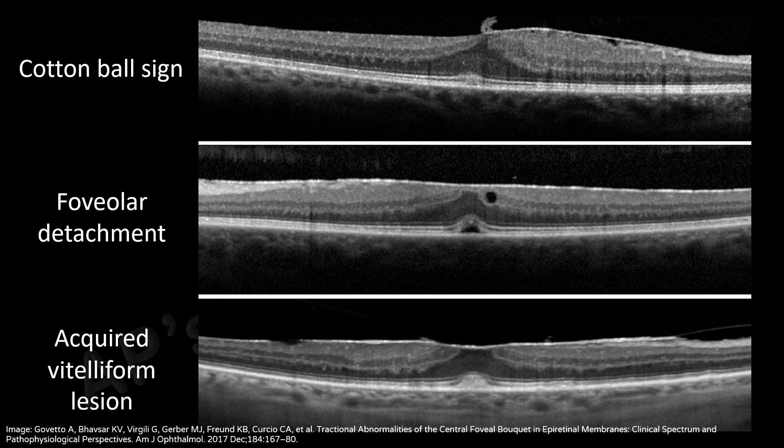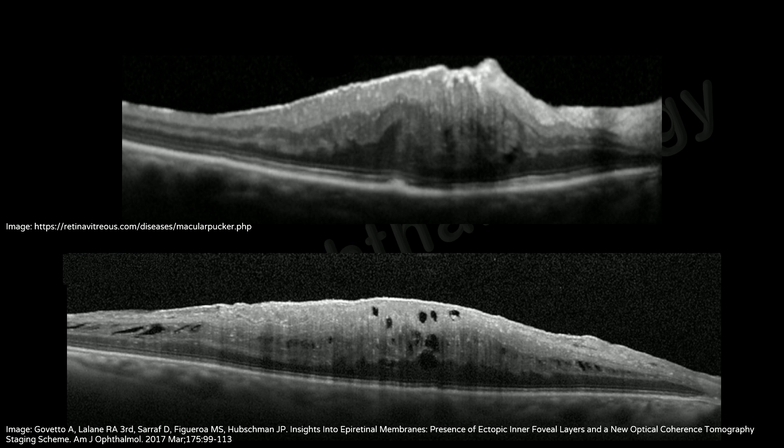The best corrected visual acuity is better in eyes with a cotton ball sign and worse in eyes with an acquired vitiliform lesion. Advanced changes due to traction include ellipsoid zone loss and macular holes. Here are some additional pictures to help familiarize yourself with OCT signs of epiretinal membranes.